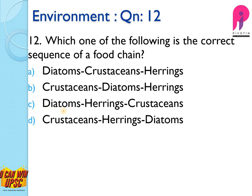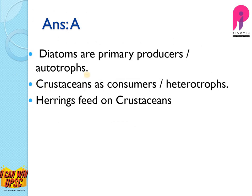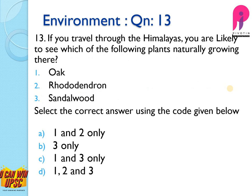Diatoms are the primary producers. Crustaceans feed on diatoms, and herrings feed on crustaceans. The answer is A. Yes, crustaceans are consumers and heterotrophs.